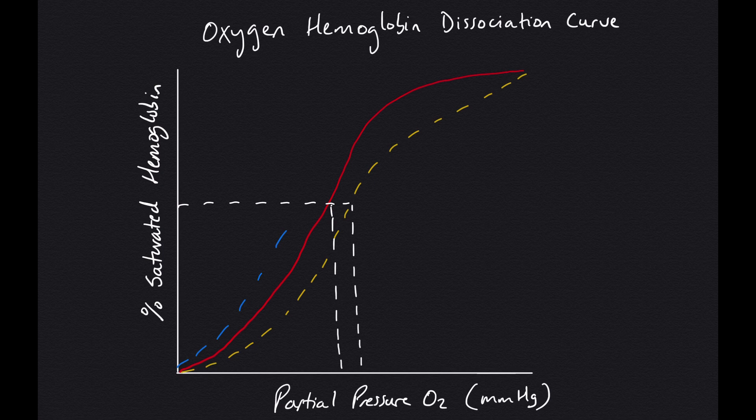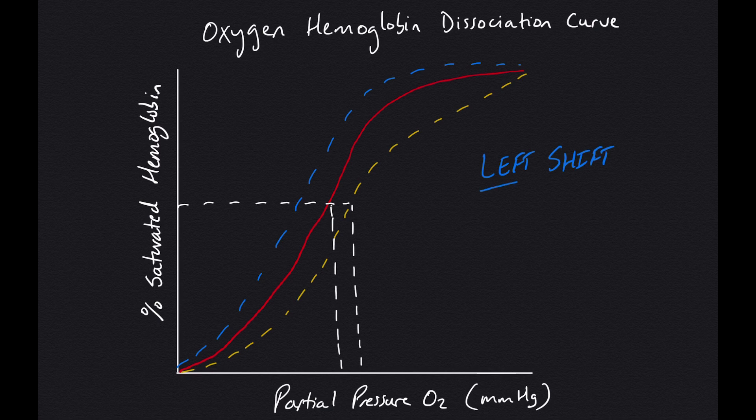Conversely, when we talk about a leftward shift of our curve, we see an increase in the affinity for oxygen by the hemoglobin molecules. Typically speaking, this will be occurring in the lungs, which is helpful because think left and lungs both start with L.